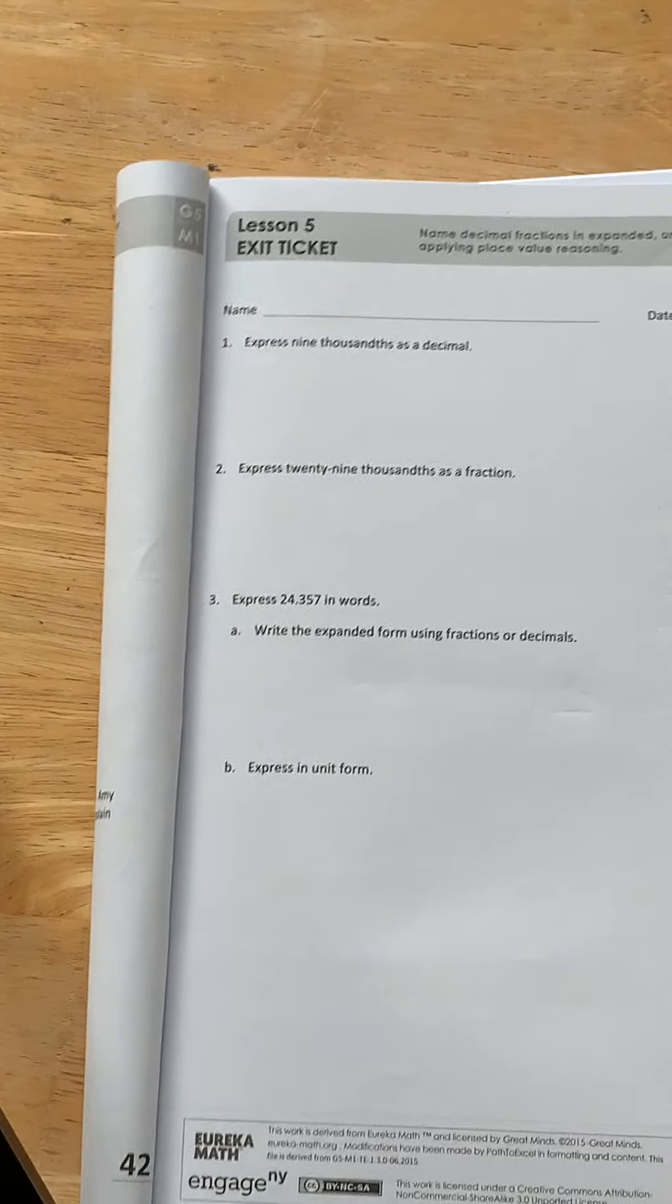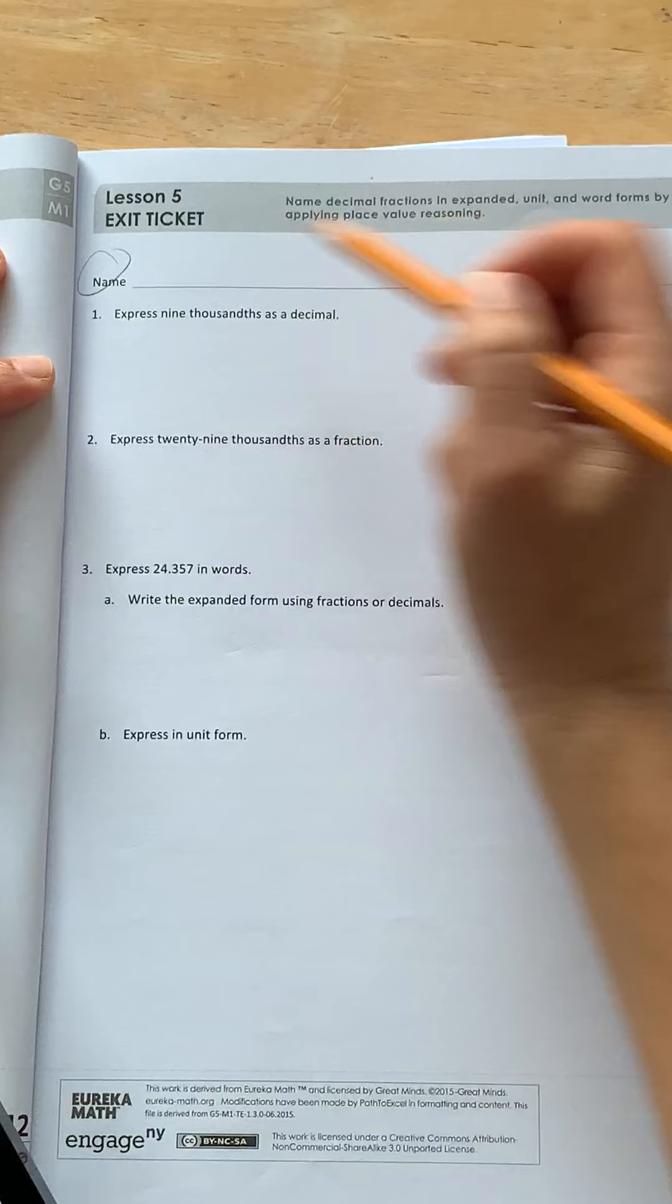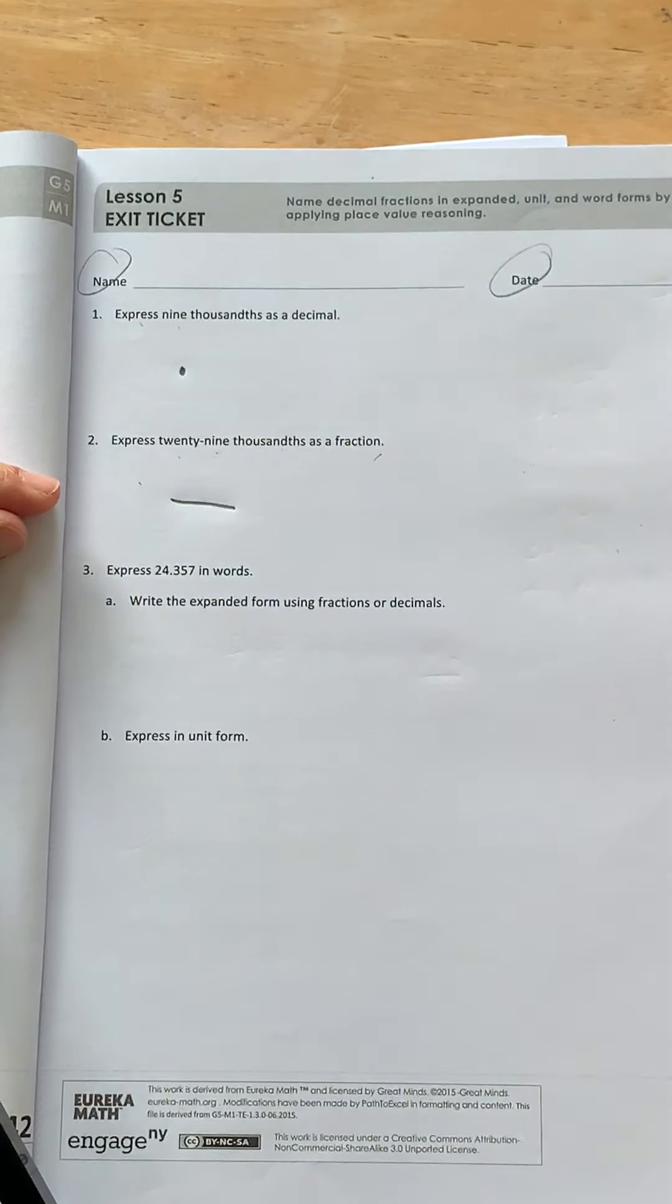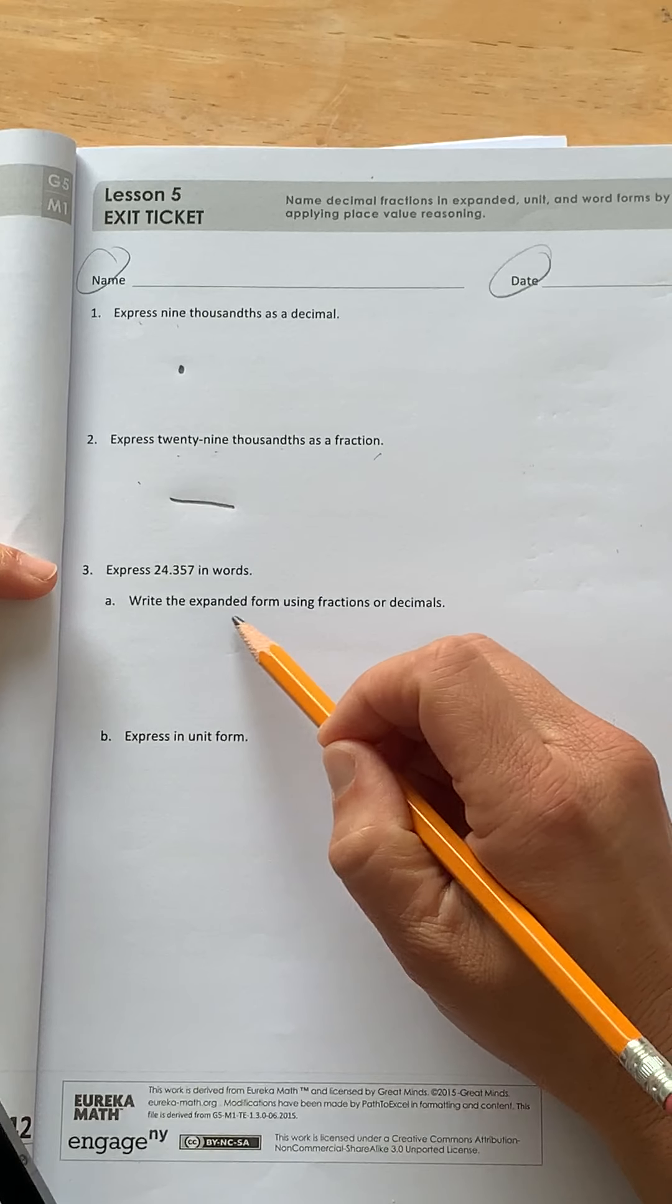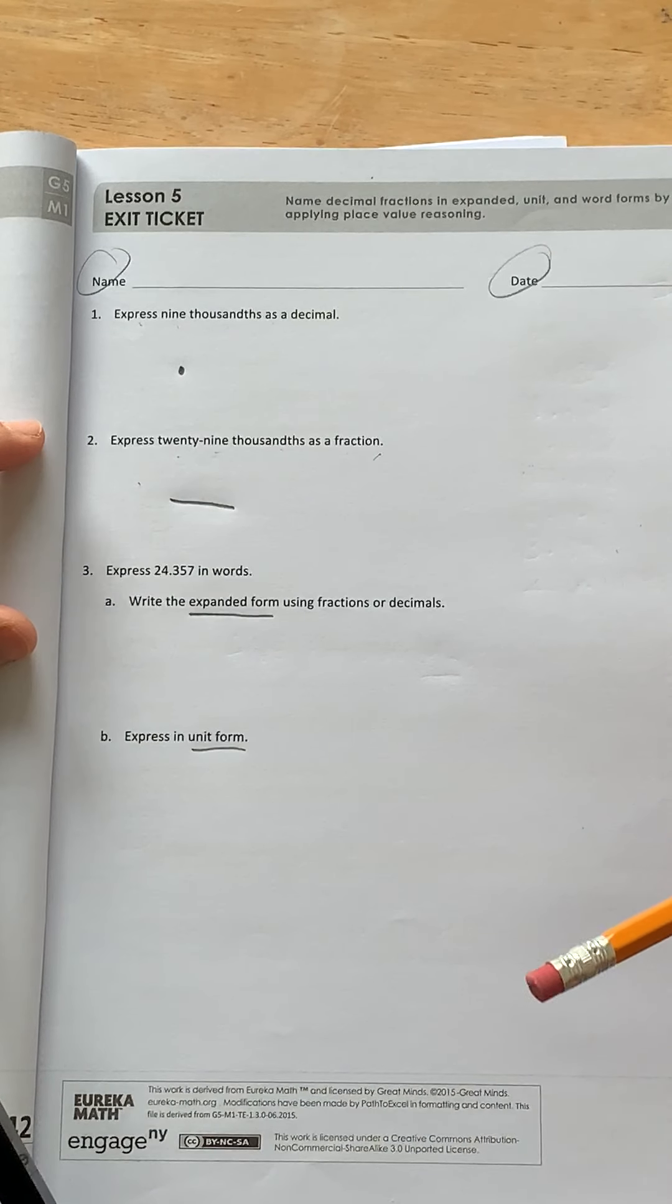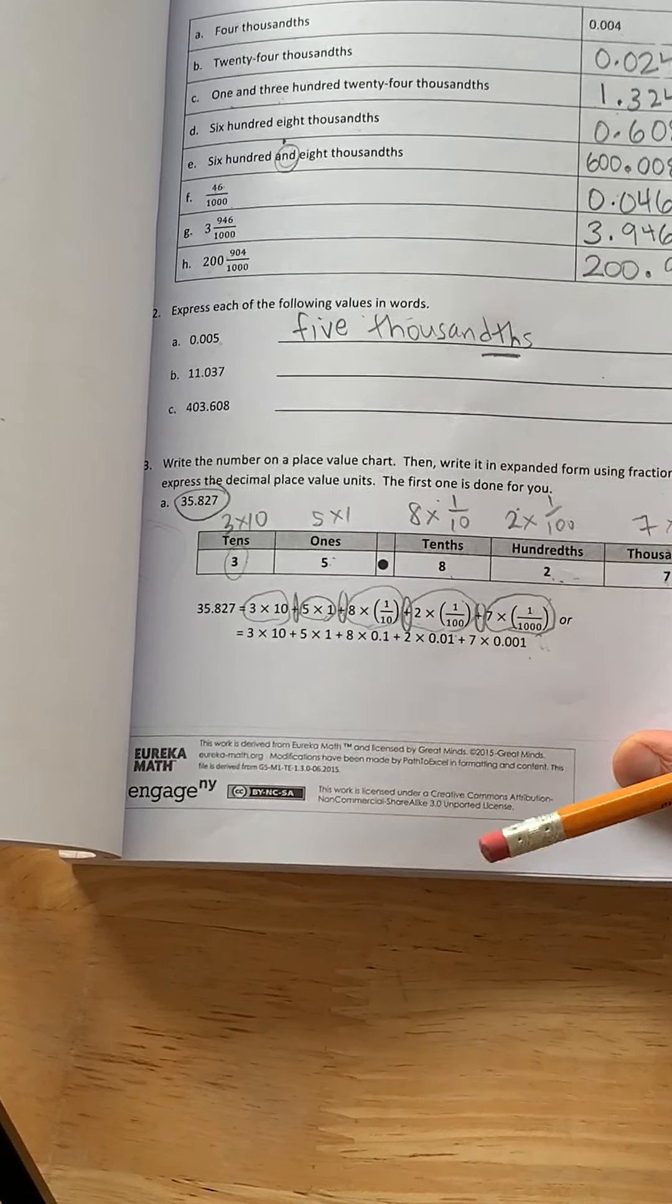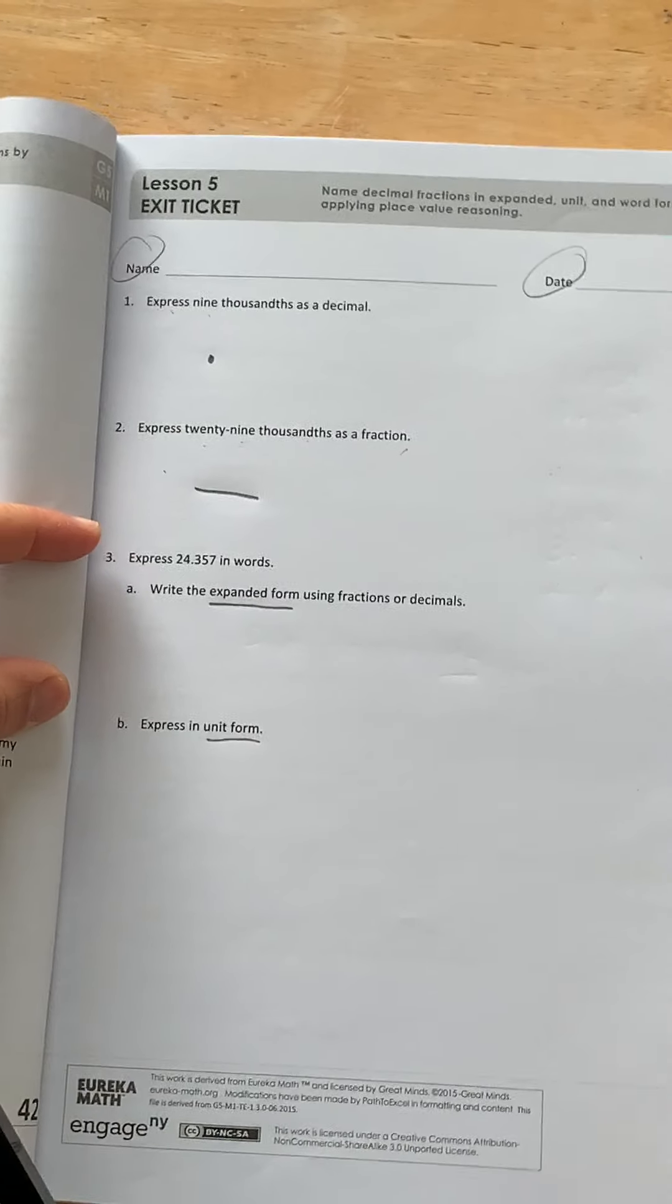Okay, I'm going to continue on with the exit ticket. I'll explain it and then give you a time to pause it and continue. So number one, put your name and date, please. Number one says express nine thousandths as a decimal. So you're going to write it in decimal form. Express 29 thousandths as a fraction. This is going to be in the form of a fraction. Express 24 and 357 thousandths in expanded form and in unit form. So I would write it when it's expanded in unit, I would write it these two different ways. You can also write it with words. Okay, was that the last one? Yes. Okay, so go ahead and pause it, pause this video, do this page, and then I'll correct some of them with you.